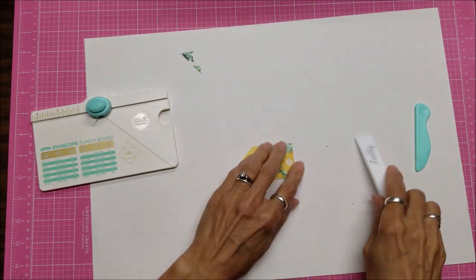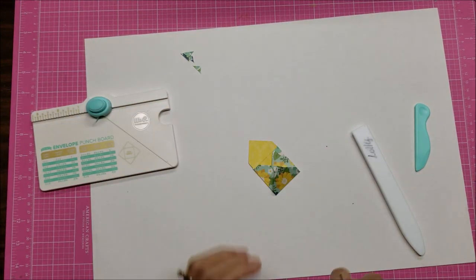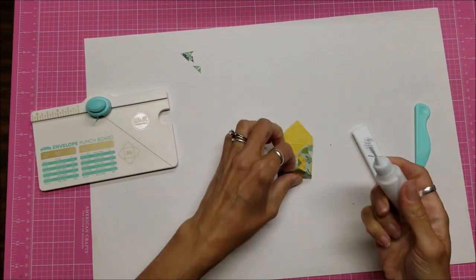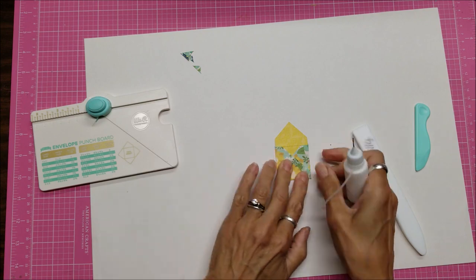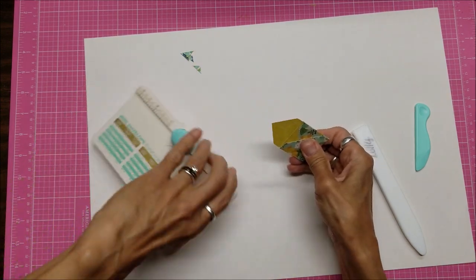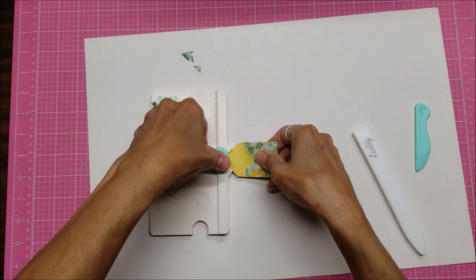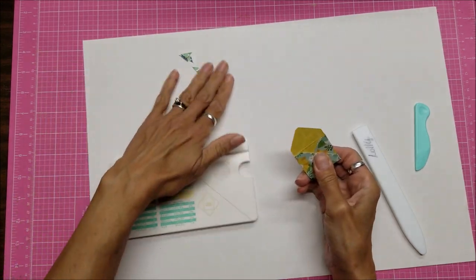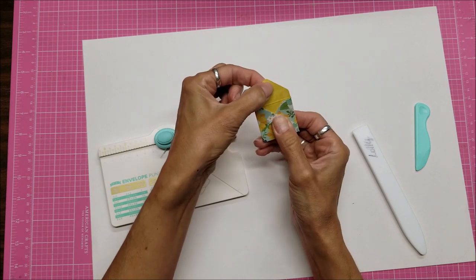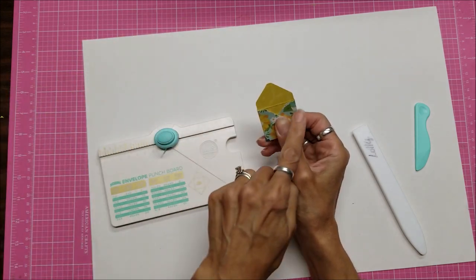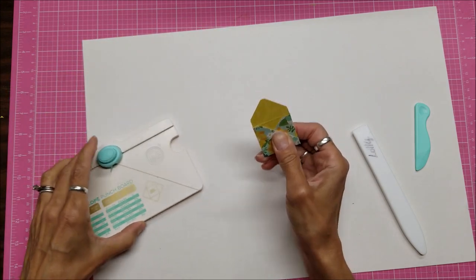I need two on the side and one on the bottom. I like to hold that shut and then go ahead over here and round the other corner off. I'm not going to fold this one over because I need this one to be stiff, but I still want the fold across there to look more like an envelope.